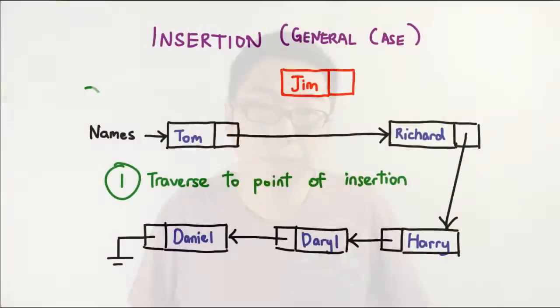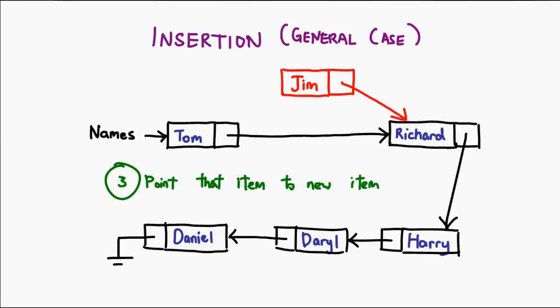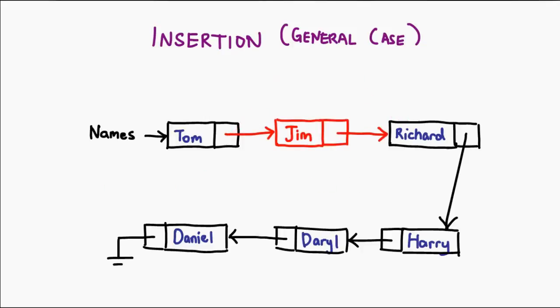For the more general case of inserting an item anywhere in a linked list — in the middle or at the end — the thought process is the same. Traverse your list until you find yourself at the item you want to modify. All I have to do is set up my new item such that it points to the next item, then take the previous item and point it to our new item. And that is how we insert a new item into the list.